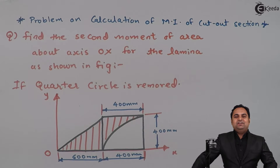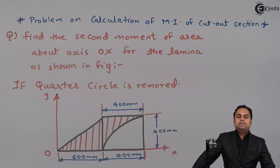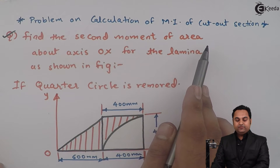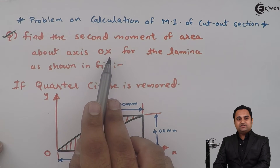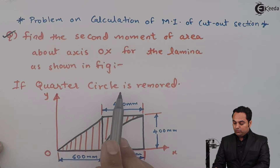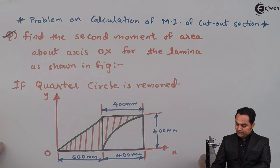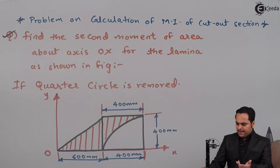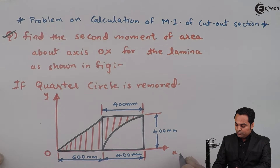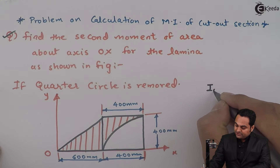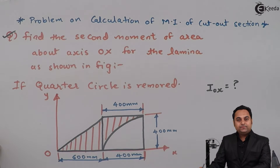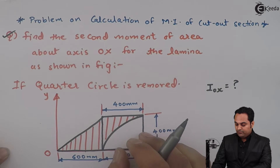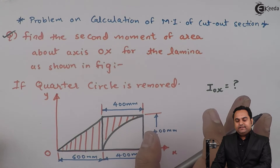Hello friends, in this video we will see a problem on calculation of moment of inertia for a cutout section. The question asks us to find the second moment of area about axis OX for the lamina as shown in the figure, if the quarter circle is removed. In the diagram, one quarter circle has been removed and the shaded portion is where the material exists.